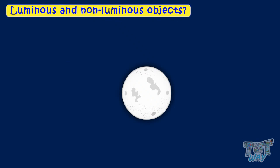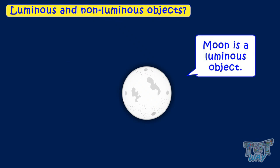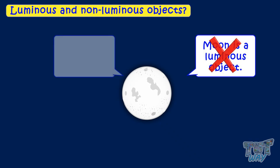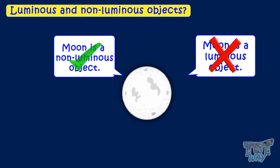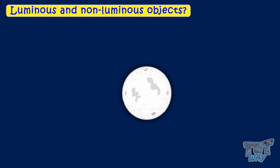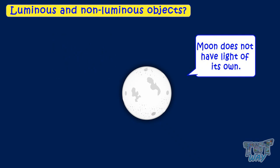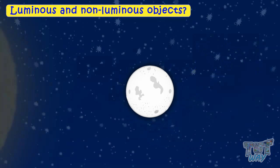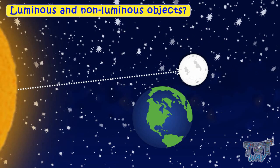Kids, the moon - is it luminous or non-luminous? Most of you will say moon is a luminous object. But no, it's a non-luminous object. Moon does not have light of its own. It reflects the light of the sun falling on it because of which it glows at night.